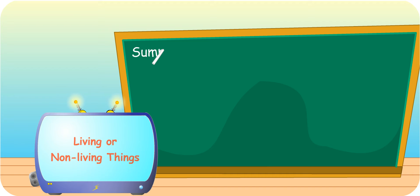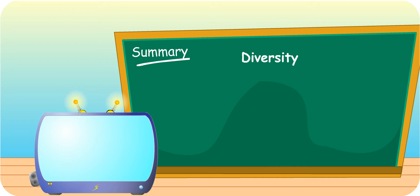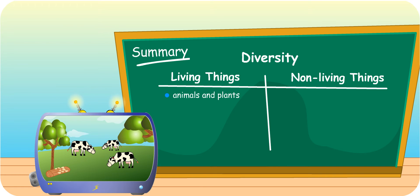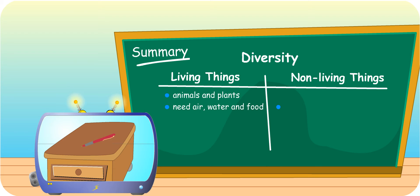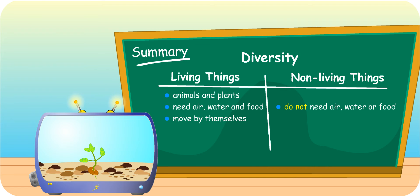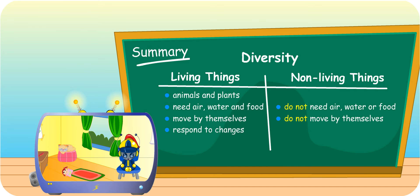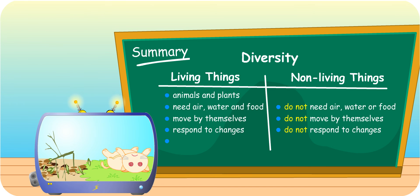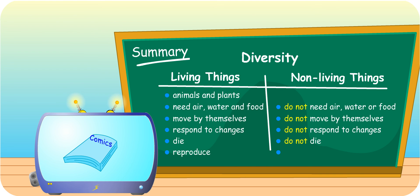Let's recall what you have learnt. We have learnt that the great variety of things around us is called diversity. Things around us are either living or non-living things. Animals and plants are living things. Living things need air, water and food to grow. Non-living things do not need air, water and food — they do not grow. Living things move by themselves; non-living things do not. Living things respond to changes; non-living things do not. Living things die; non-living things do not. Living things reproduce; non-living things do not reproduce.